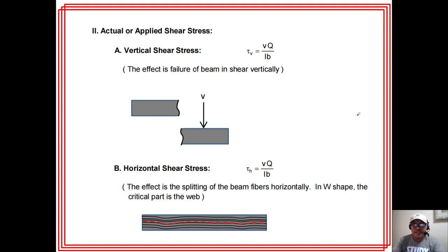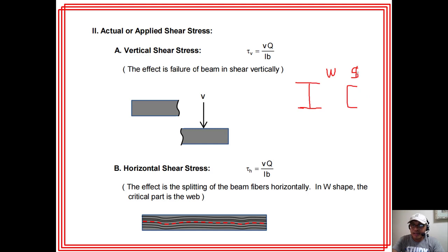For W-shape or S-shape cross-sections, the critical part for shear is the web. The flanges carry very small shear force compared to the web. That is why we have the average web shear stress, in which we neglect the flanges and consider only the web. The formula is V over D times TW, where D times TW is the area of the web — D is the overall depth and TW is the thickness of the web.